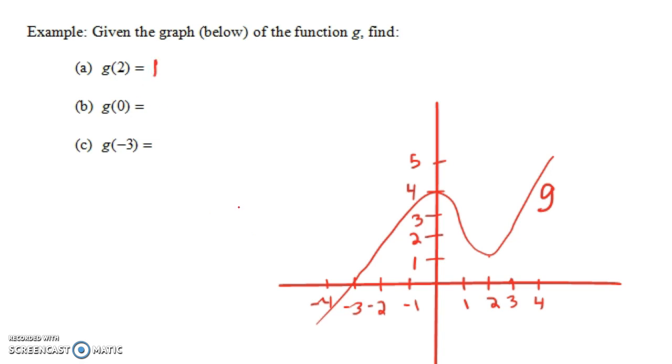Now what's g of 0? Well, go left and right till we find 0. 0 is right here, and how far do we have to go up or down to find g of 0? We go up to 4. That point 0 comma 4 is on the graph of the function, so g of 0 is 4.